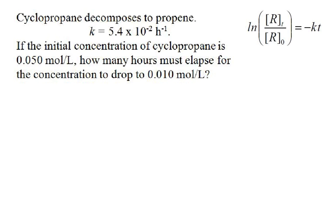Now, a good time to try a problem. This is a problem that comes up in the textbook, I think it's example 15-5. It says cyclopropane decomposes to propene. And it gives you the constant, 5.4 times 10 to the minus 2 hours to the minus 1. You should be a little bit aware of what the units are for your constant K. If the initial concentration of cyclopropane is 0.05 molar, moles per liter, how many hours must elapse for the concentration to drop to 0.01 moles per liter? So starting at 0.05, how long does it take to get down to 0.01?